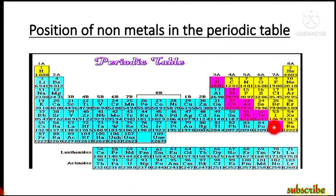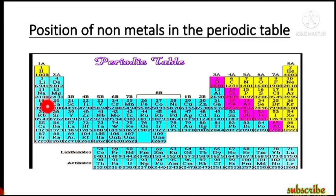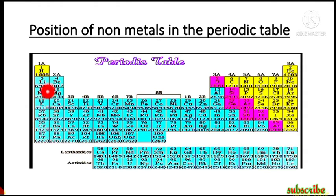Some elements along the boundary are metalloids — they show some properties like metals and some like nonmetals, representing a transition state. As we move from left to right in a period, metallic property decreases, and elements gradually convert from metal to nonmetal. Each and every period ends with nonmetals, and this transition region is where metals convert into nonmetals.